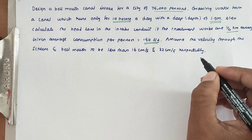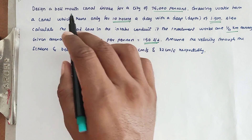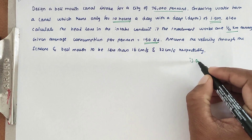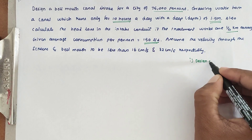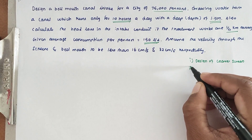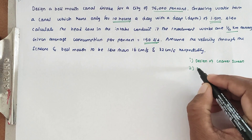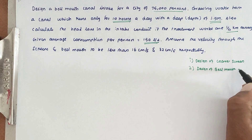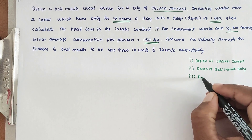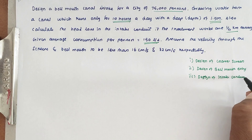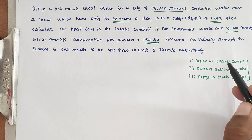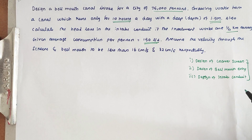We have to design 3 parts of the bell mouth canal intake. The first one is design of coarse screen, the second one is design of bell mouth entry, and the third is design of intake conduit. So there are 3 components and we have to design all those 3 components.